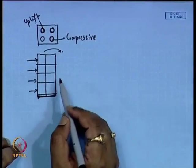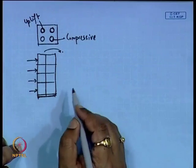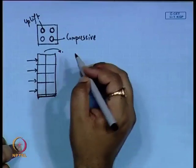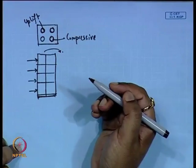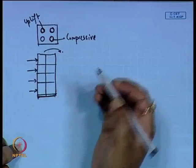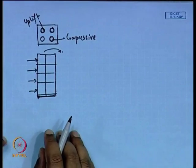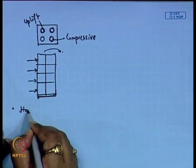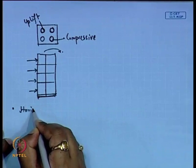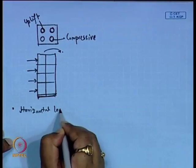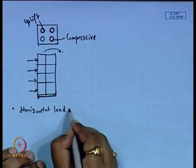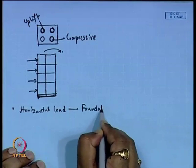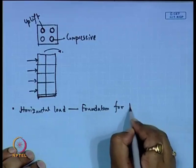The direction of the vertical load can be perfectly vertical or inclined, depending upon the type of structure or loading. That can be inclined compressive load or inclined tension load. Now if we are talking about horizontal load, that is used for the foundation of a retaining wall.